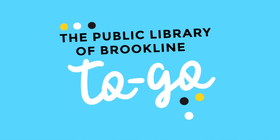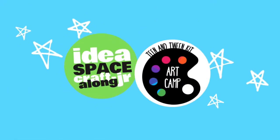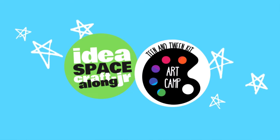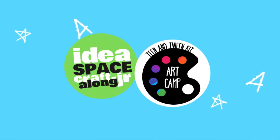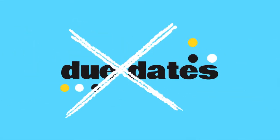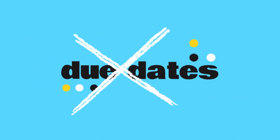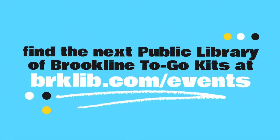Is this your first Public Library of Brookline to-go program? Here's how it works. Each to-go kit comes complete with everything you need to follow along with an awesome DIY project and video or written instructions created by one of your local librarians. The best part? Absolutely no due dates. You can keep everything included in your kit. Visit brklib.com events to find out what and when our next project will be.